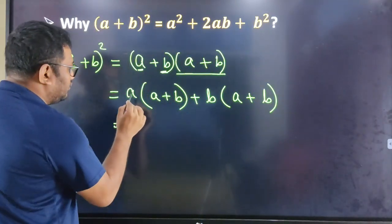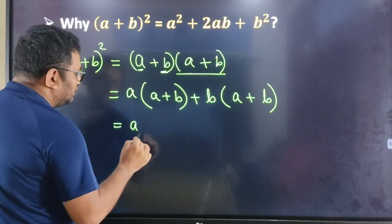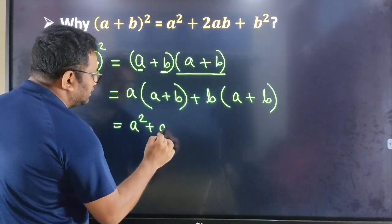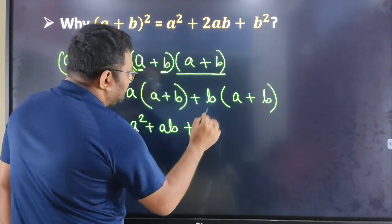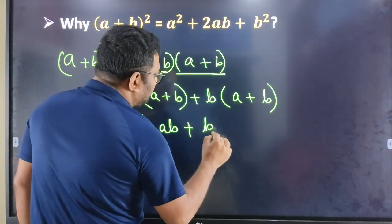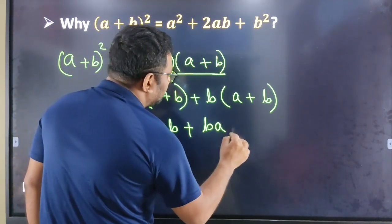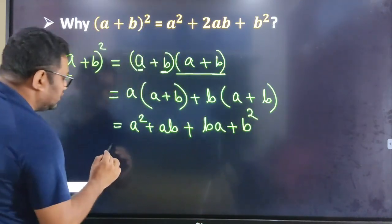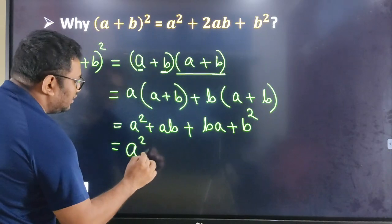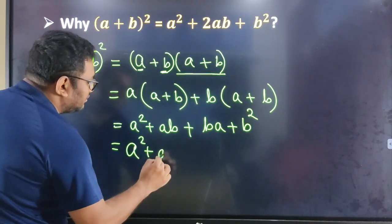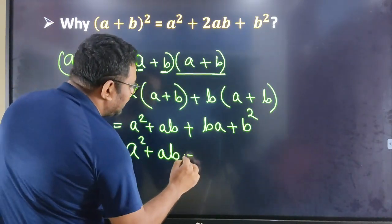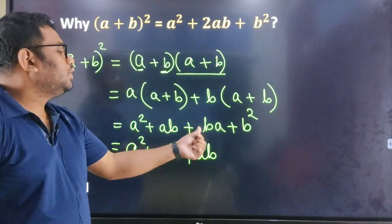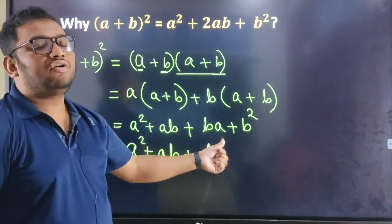I open this bracket. A into A — what is A squared? A into B — what is AB? B into A — what is BA? What is B squared? A squared plus AB plus BA — why do you have AB? 2 into 3 and 3 into 2.